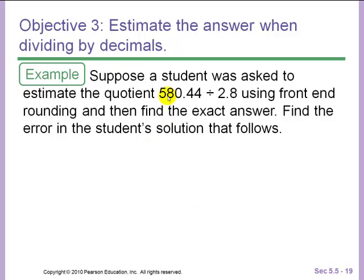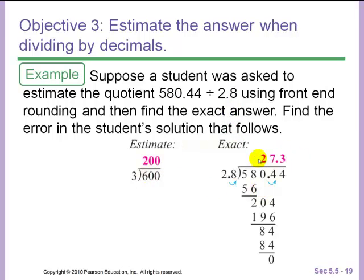Now let's talk about how you can use estimating to check your answer. Suppose a student was asked to estimate the quotient 580.44 divided by 2.8 using front-end rounding, and then find the exact answer. Find the error in the student's solution that follows. So if we start with rounding, we're doing 600 divided by 3, which is about 200. Their answer is 27.3.